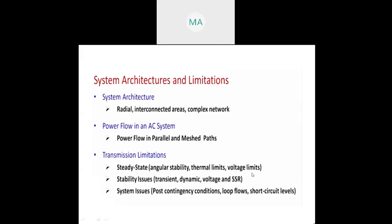We have different transmission line systems: radial, interconnected, and complex network. In the radial case with FACTS devices, radial means from source to load only without any connections in between. In the interconnected system there is interconnection - if one fails, it can get power from another source. The complex network is a combination of radial and interconnected systems having more number of sources. In the power flow there are parallel methods and measurement paths.